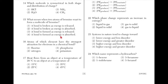Which molecule is symmetrical in both shape and distribution of charge? CH4 is symmetrical in distribution and charge. HCl is not symmetrical because the elements are not the same. H2O is not symmetrical because there is a dipole from the positive charge on the hydrogen element and the negative charge on the oxygen element. And NH3 is not symmetrical because there are three hydrogen elements.